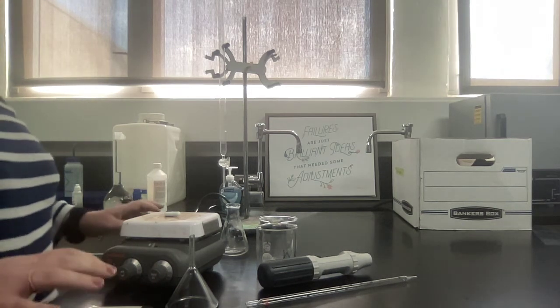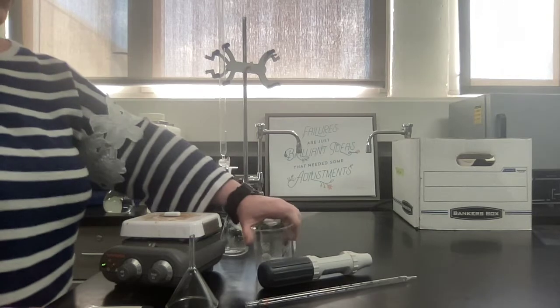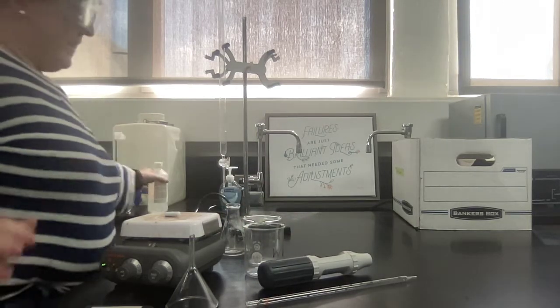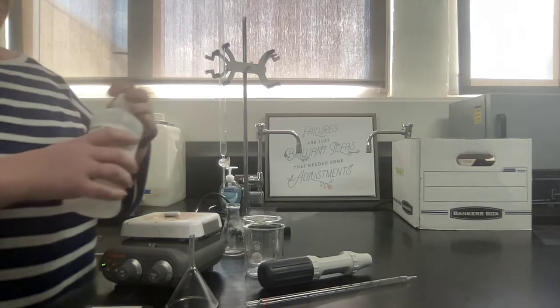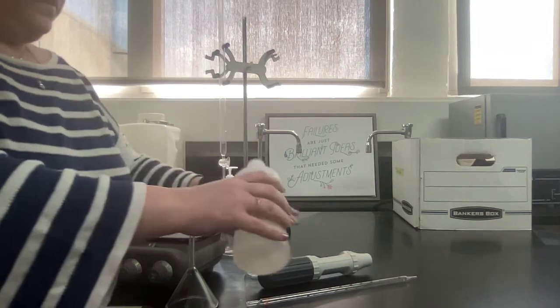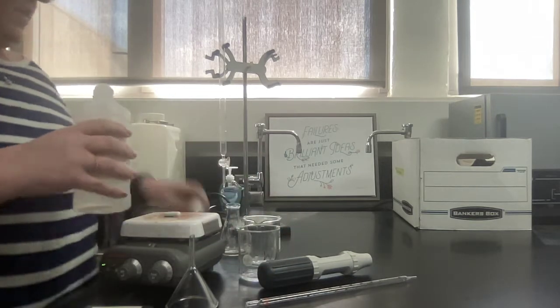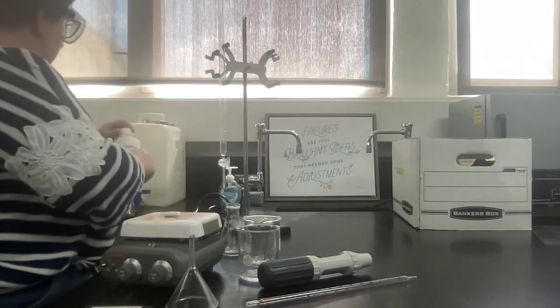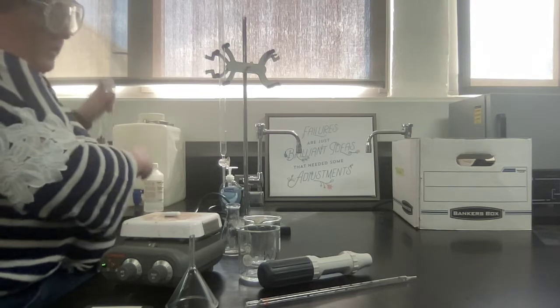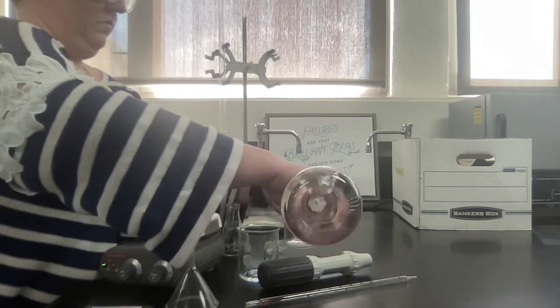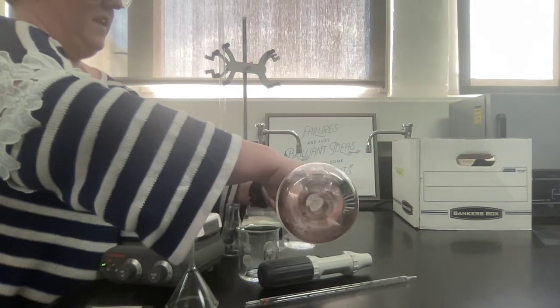All right, for this lab you're going to need your tray and you should have two beakers on it. You can take those two beakers up to the front and get some hydrochloric acid. You do not need a lot, you're only going to need between 5 and 10 milliliters. And then some NaOH, you will need more of that. I would say start with between 50 and 75 milliliters.